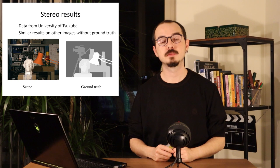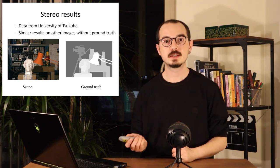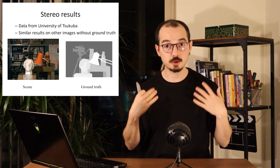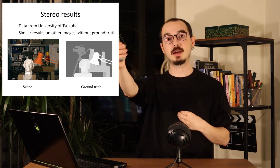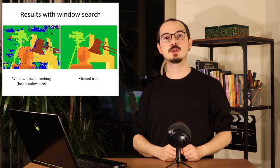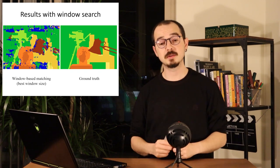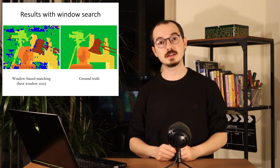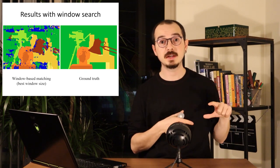Here is an input from the Middlebury dataset and its corresponding ground truth. In this representation, whiter pixels are closer to the camera and darker pixels are further away. When we apply the window search and compute disparities, this is the type of result we get after optimizing the window size. There are still some issues because certain regions cannot be effectively matched.